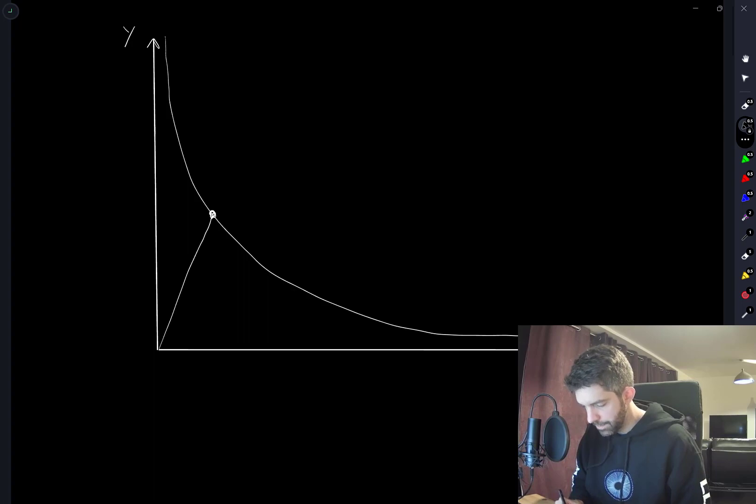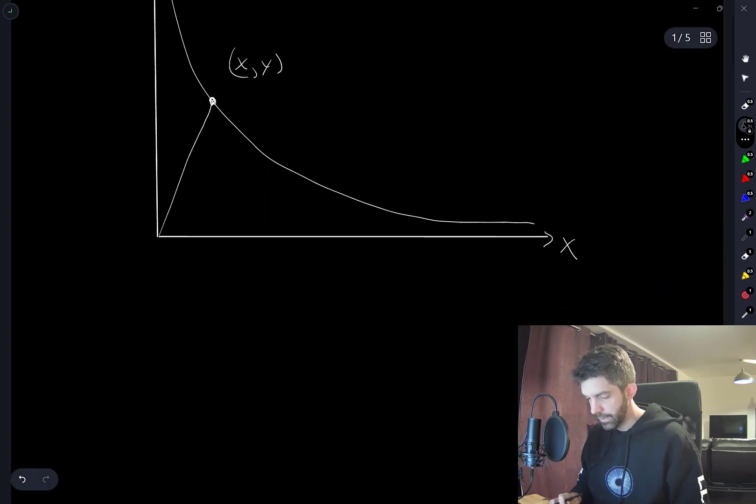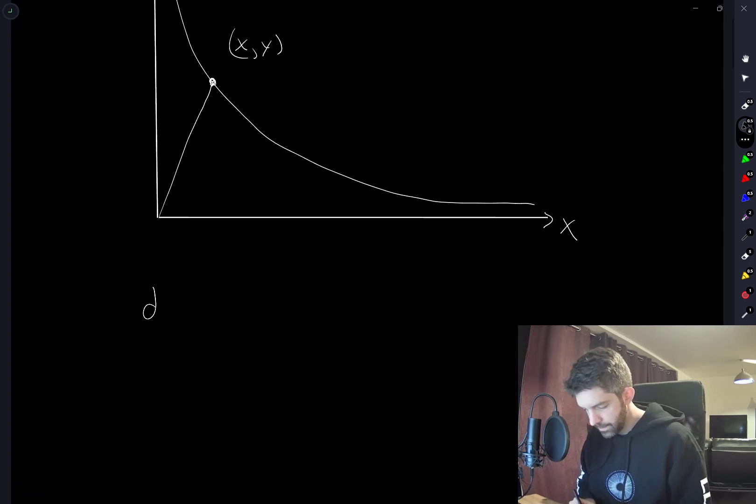So if I have an arbitrary point x, y on this thing, the distance squared is x squared plus y squared. But I also have that, I'll write this as y is equal to 8 over x.